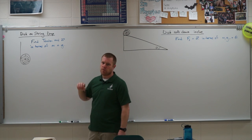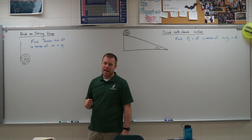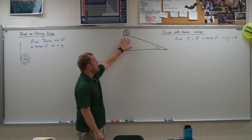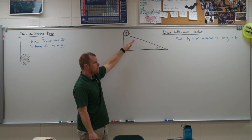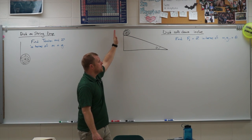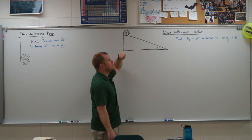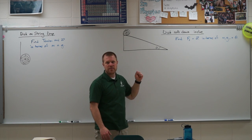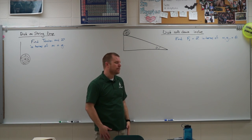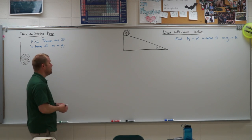This is a uniform disc, so we know the moment of inertia is one-half mR squared. And then we are going to find the force of friction and the acceleration of that disc as it rolls down an incline, in terms of the mass of that disc, the acceleration of gravity, and the angle of that incline.